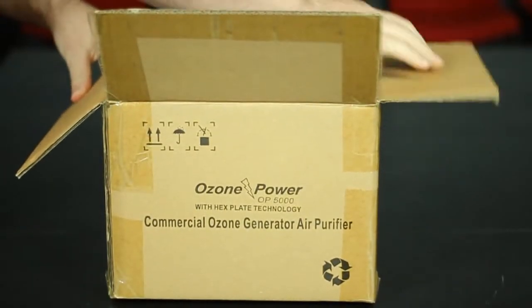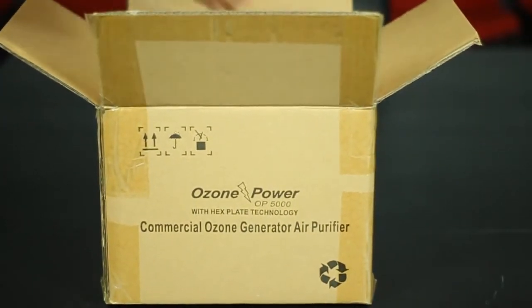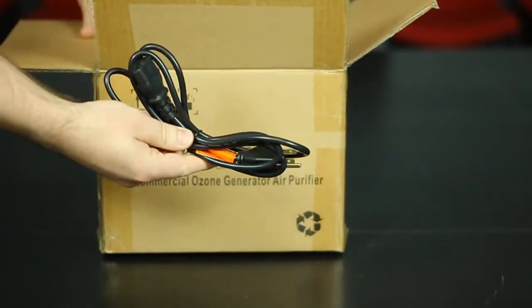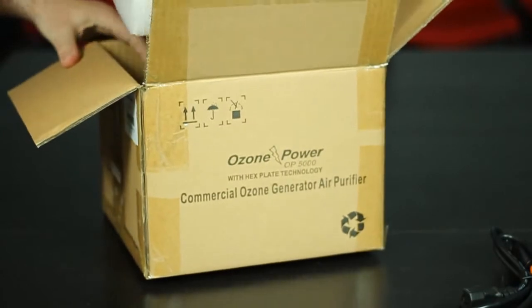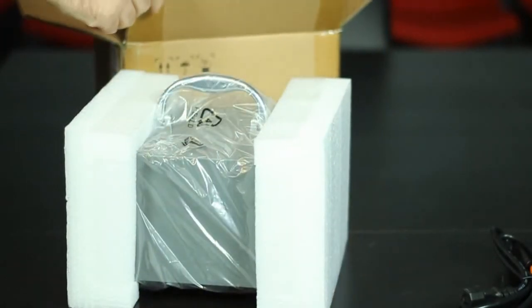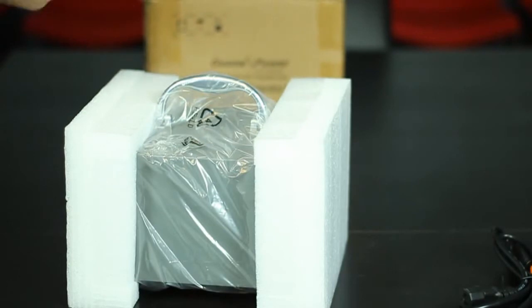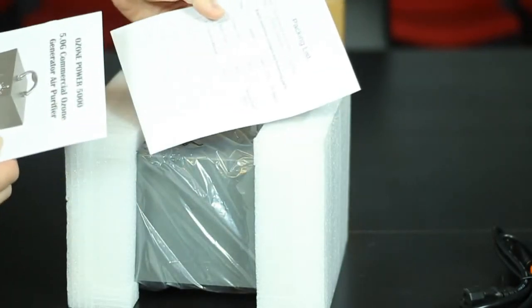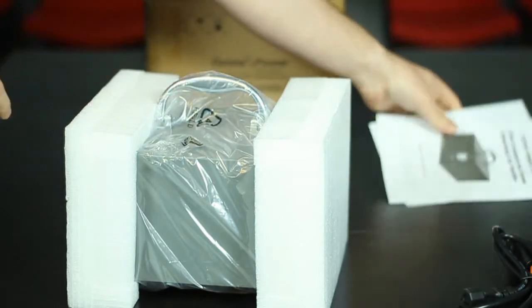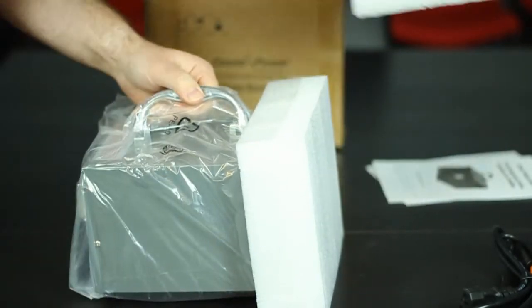Inside the box, you will find a three-prong power cord, your ozone generator, an instruction manual, and a packing list. Unpack your ozone generator.